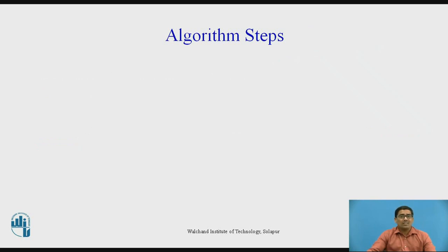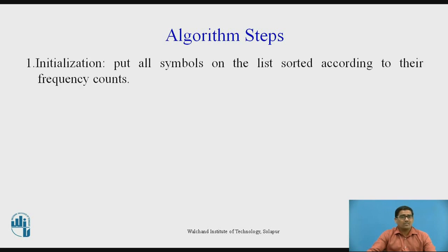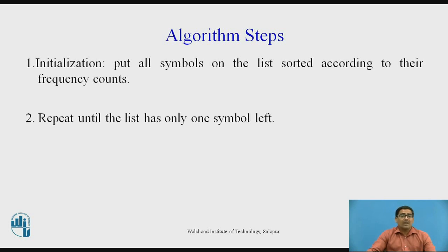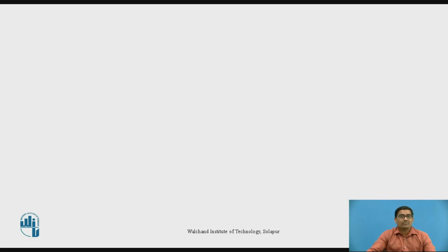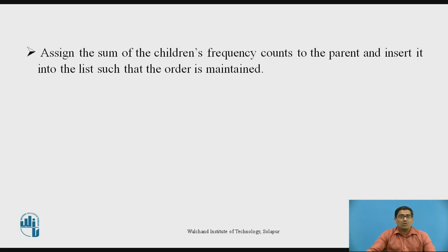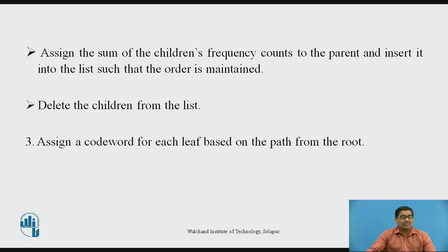Now we want to see the algorithm steps of Huffman coding one by one. First, initialization: put all the symbols on a list sorted according to their frequency counts. Second, repeat until the list has only one symbol left. From the list, pick up the two symbols with the lowest frequency counts, form a Huffman sub-tree with these two symbols as child nodes, and create a parent node for them. Assign the sum of the children's frequency counts to the parent and insert it into the list such that order is maintained. Then delete the children from the list. Third, assign a codeword for each leaf based on the path from the root.